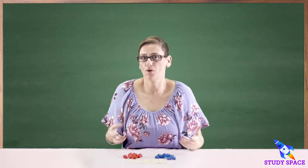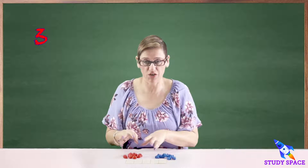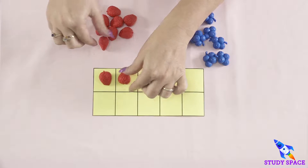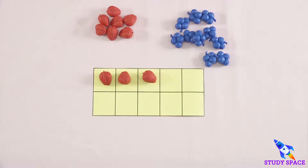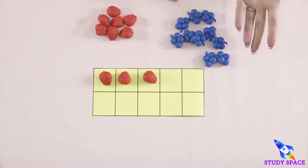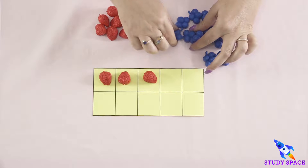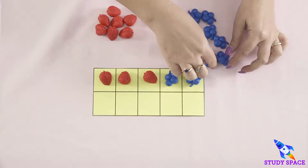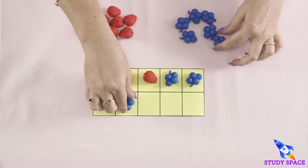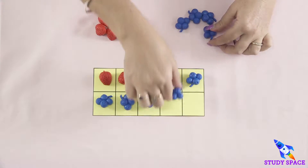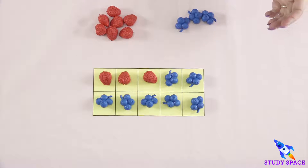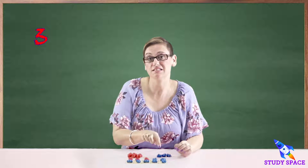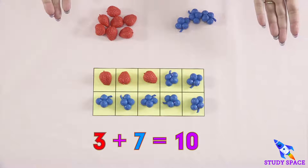This time we're up to three, so I need three strawberry friends — one, two, three. So how many blueberry friends am I going to need? One, two, three, four, five, six, and seven. So three plus seven also equals ten.